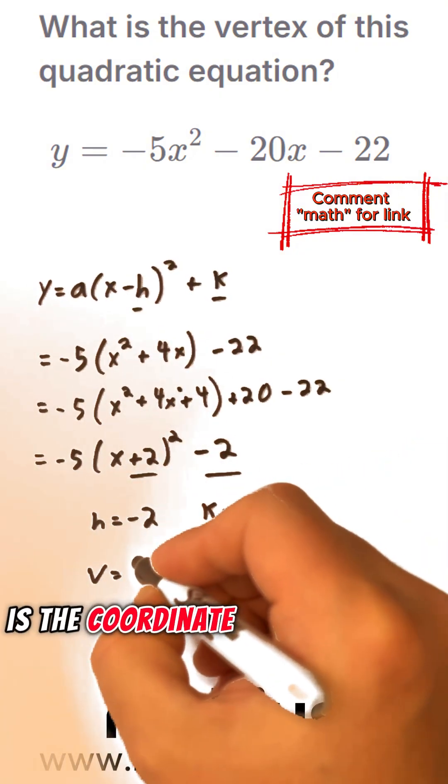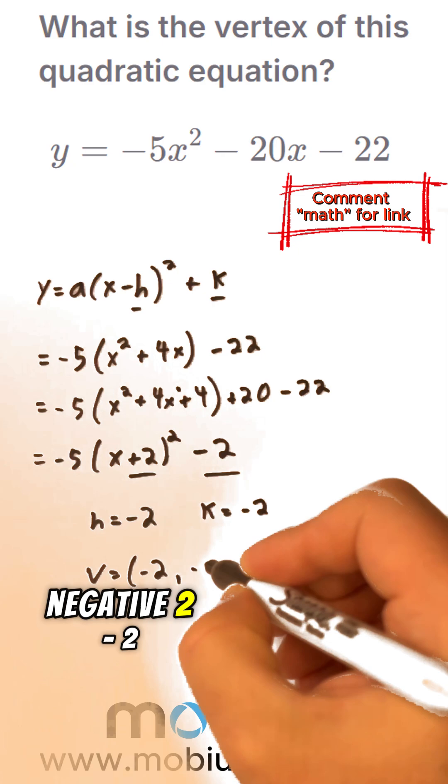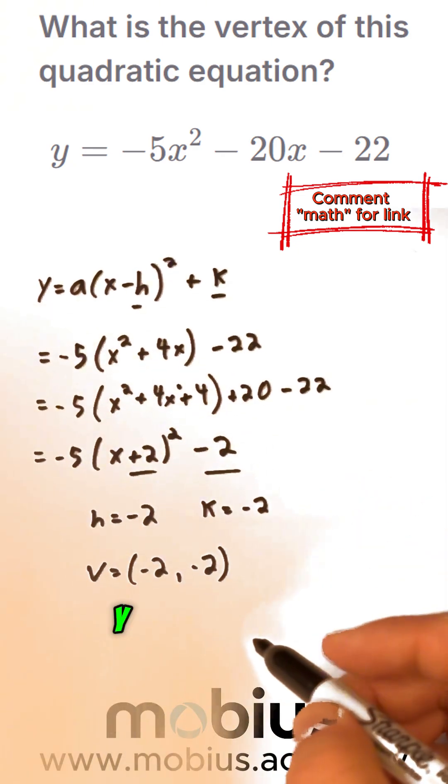So our vertex is the coordinate negative 2, negative 2. That's our x, that's our y.